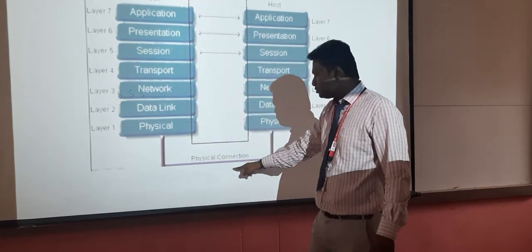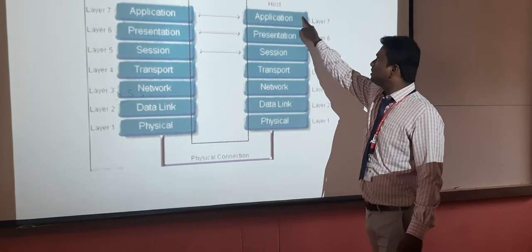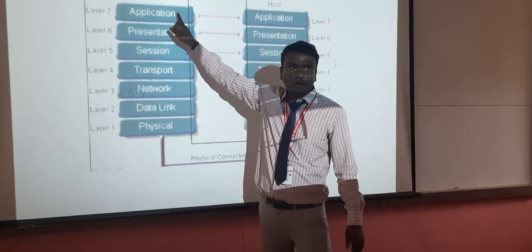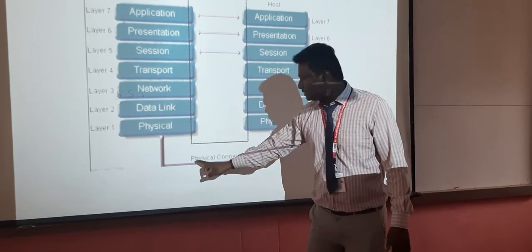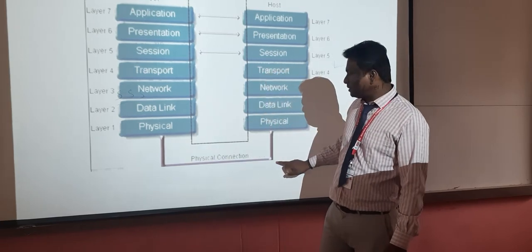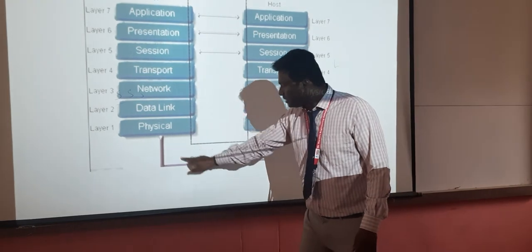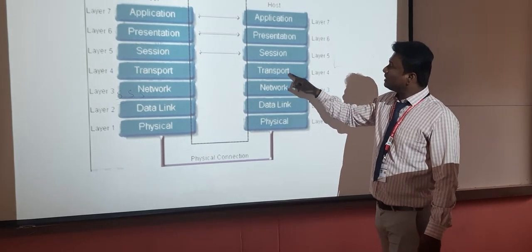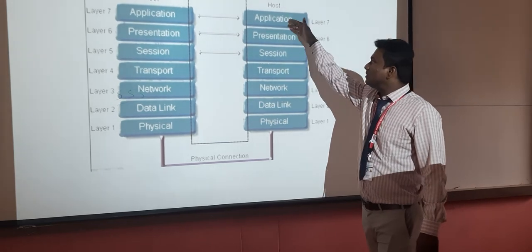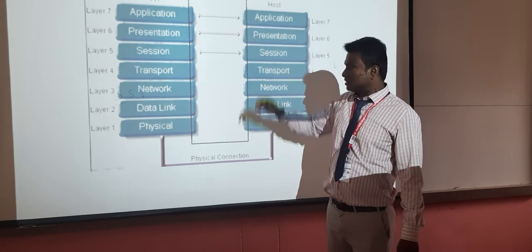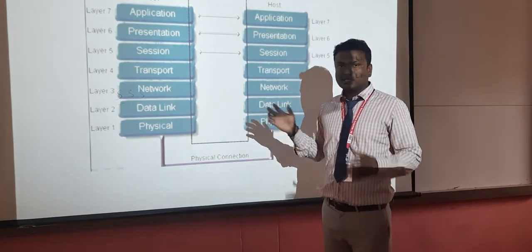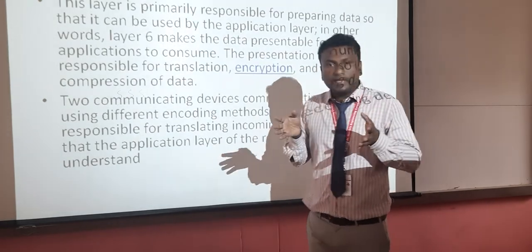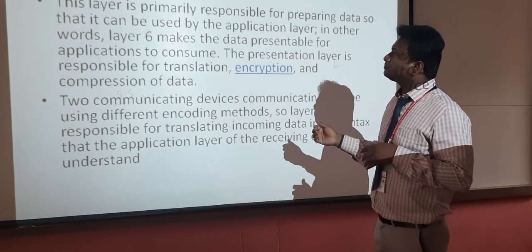The application data moves through this path to the physical medium and to the end user. The data is sent top-to-bottom, and when transmitting through the physical layer, data is in the form of bits. Using the Network Interface Card (NIC), the data moves through the physical layer up through data link, network, transport, session, and presentation layers to the application layer, where it is viewed by the end user. The TCP/IP model is the real-time working model used nowadays.